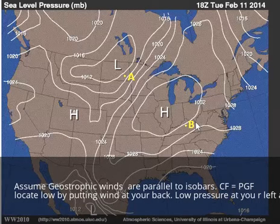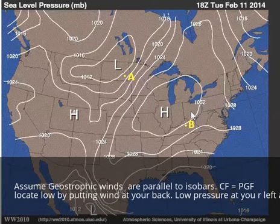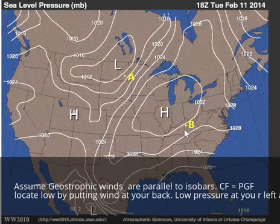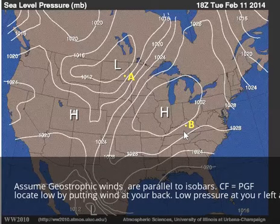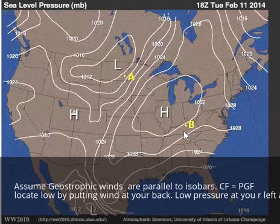But we have to account for friction too, and to do that we have to cross isobars at about a 30-degree angle away from higher pressure. So our winds would look something more like this, and our winds would be from the northeast or even north-northeast — probably something like 20 or 30 degrees — when we've accounted for friction, because we don't actually have geostrophic winds.